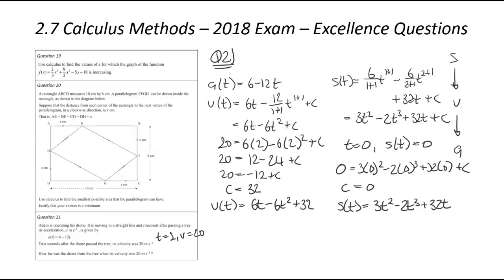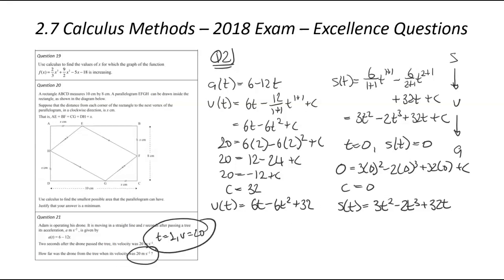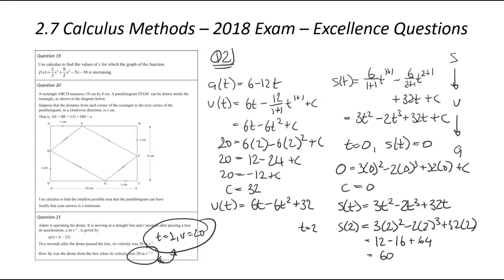So we've now got a displacement equation, and we can link it back to the actual question: how far was the drone from the tree when the velocity was 20 meters per second? Velocity at 20 corresponds to t equals 2, so we substitute t equals 2: displacement equals 3 times 4 minus 2 times 8 plus 32 times 2. That's 12 minus 16 plus 64. Our final answer is going to be 60 meters. So after two seconds, or at a velocity of 20 meters per second, the drone is 60 meters away from that fixed point.